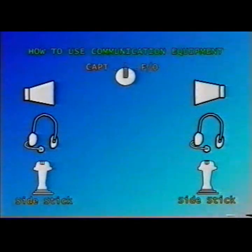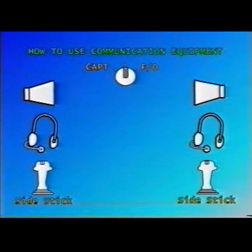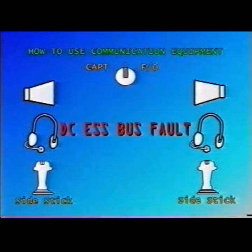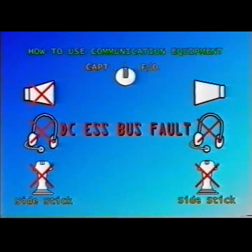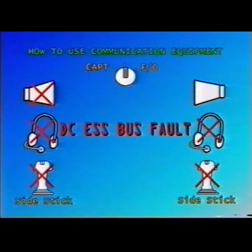How to use communication equipment with DC Essential Bus failed. Every time you experience a DC Essential Bus fault, radio communications are completely lost due to loss of VHF1 — the one normally used to handle ATC — as well as audio control panels 1 and 2, which are no longer supplied.